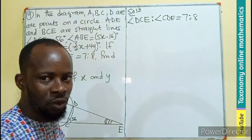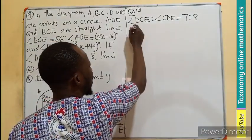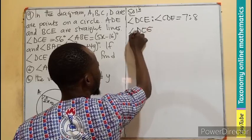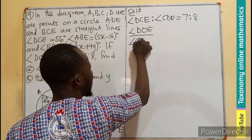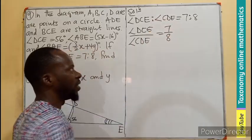We know ratio can be translated into fraction. So this is going to be angle DCE divided by angle CDE equal to 7 out of 8.